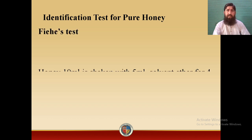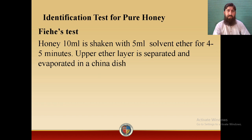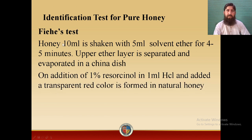Identification test for pure honey: in the market, artificial honey is also sold, so we can test whether honey is pure, adulterated, or artificial. For this purpose, the Fiehe's test is used. To perform the Fiehe's test, 10 ml of honey is shaken with 15 ml of solvent ether for 4–5 minutes. The upper ether layer is separated and evaporated in a china dish. On addition of 1% resorcinol in 1 ml hydrochloric acid, a transparent red colour is formed in natural honey. If the red colour is not formed, the honey is adulterated or completely artificial.